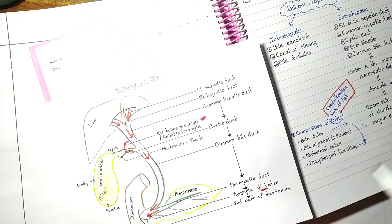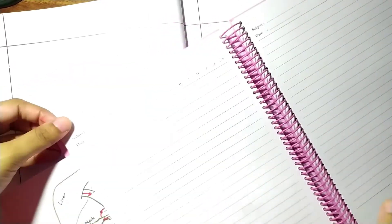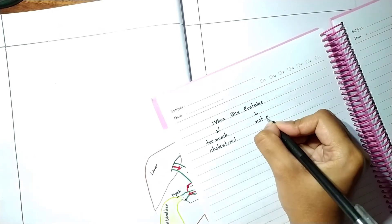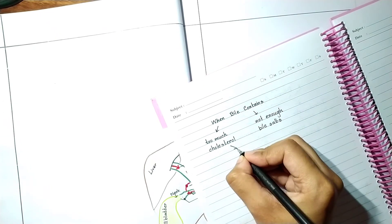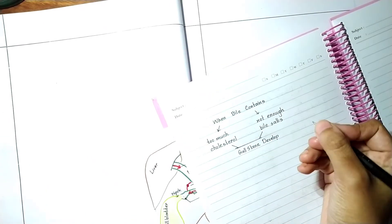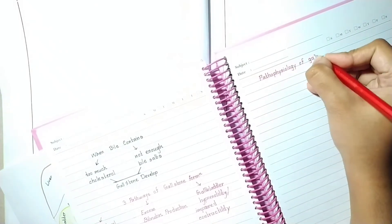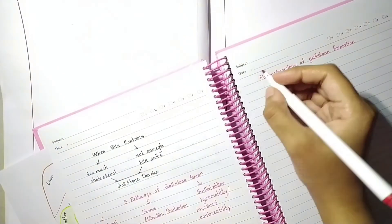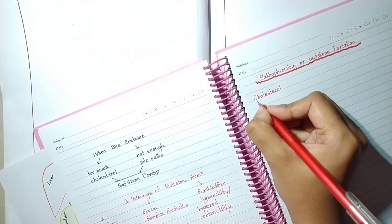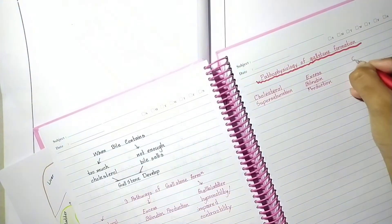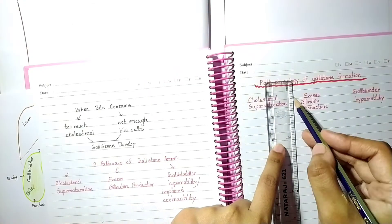All these events are normal in our body. Now, what are those conditions that break the normality and cause gallstone formation? When bile contains too much cholesterol but not enough bile salts, that may contribute to gallstone development. Let's discuss the pathophysiology of bile. There are three main pathways in the formation of gallstone: cholesterol supersaturation, excess bilirubin production, and gallbladder hypomotility or impaired contractility.